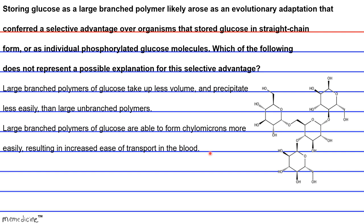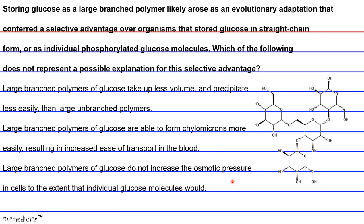Is it C, large branch polymers of glucose do not increase the osmotic pressure in cells to the extent that individual glucose molecules would? Or is it D, large branch polymers of glucose can offer many simultaneous sites for hydrolysis of glycosidic links? This requires some outside knowledge, but for some of you geniuses, you can intuit or infer the correct answer from these long explanations.